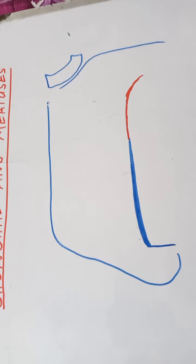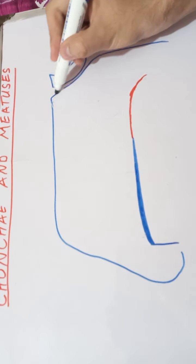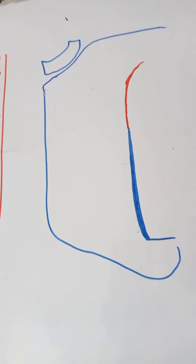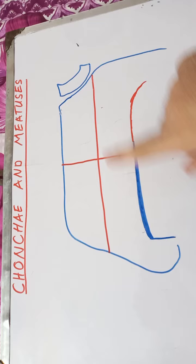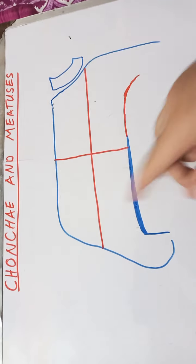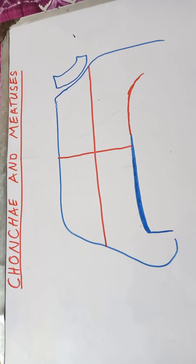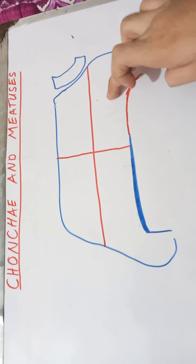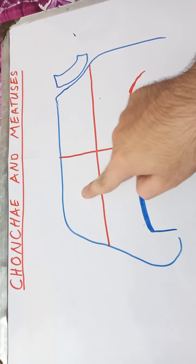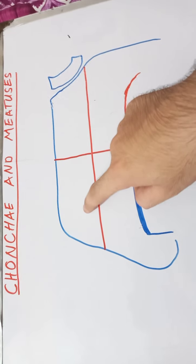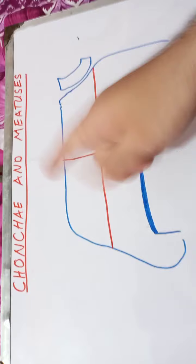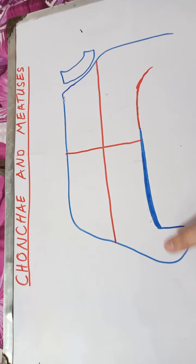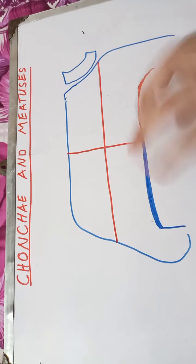For arterial supply, both the lateral wall and the nasal septum are divided into four quadrants: antero-superior, antero-inferior, postero-superior, and postero-inferior. The antero-superior quadrant is supplied by the anterior ethmoidal and posterior ethmoidal arteries, as it overlies the ethmoidal bone. The antero-inferior quadrant, lying close to the face, is supplied by branches of the facial artery — specifically the superior labial branches.